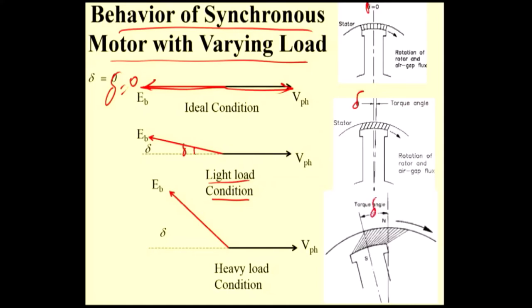You are increasing the load further. What will happen? The rotor tries to come out from synchronism, so delta will be more. If you keep on increasing the load, at one point of time the rotor comes out from synchronism. The synchronous motor will either run at synchronous speed or zero speed. If you increase the load, the delta keeps on increasing, and at one point the rotor comes out from magnetic locking.